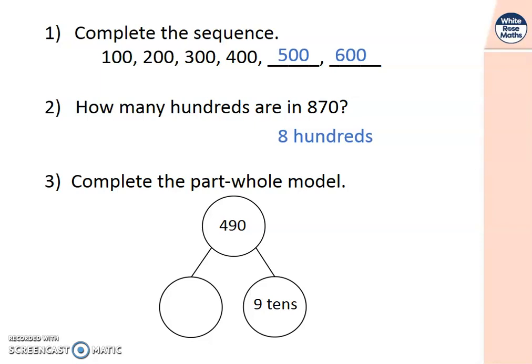Number 3. Complete the part whole model. The whole is 490. That's made up of 9 tens. 9 tens and 90. What's the other part? You should have spotted that it is 4 hundreds. Well done if you spotted that. You will need to be able to do this today.